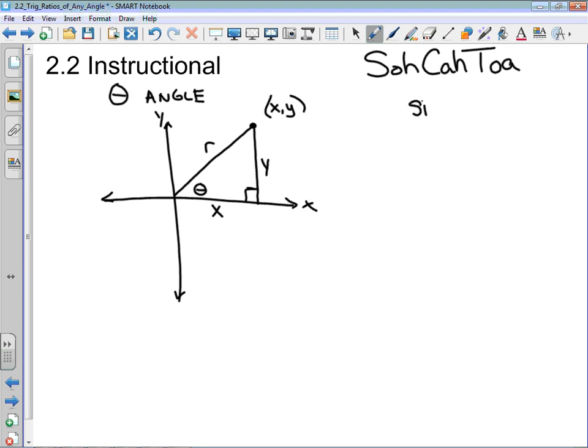I'm going to write out the three trig ratios, so sine theta is opposite over hypotenuse. In this particular triangle, sine theta, the opposite side we labeled as y, and the hypotenuse side is labeled as r.